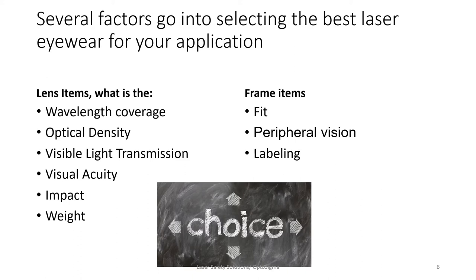Several factors go into selecting the best eyewear for your application. On the lens side: what wavelength coverage do you need, what is the optical density or attenuation, how well can you see — visible light transmission — and related to that, visual acuity or clarity. Also consider impact resistance, and weight — how heavy is the frame on your face. On the frame side there are things such as fit, peripheral vision, and labeling. Of those three, peripheral vision is probably the least important.